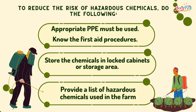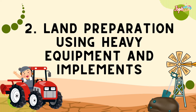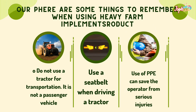To reduce the risk of hazardous chemicals: appropriate PPE must be used, follow safety procedures, store chemicals in locked cabinets, and provide a list of hazardous chemicals used in the farm. When using heavy farm implements, do not use a tractor for transportation as it is not a passenger vehicle. Use a seatbelt when driving a tractor, and use PPE to protect the operator from serious injuries.